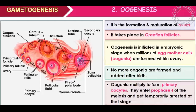Today we are going to start with the topic of oogenesis. Oogenesis is the formation and maturation of the ovum. Ovum's formation and maturation is known as oogenesis. Oogenesis takes place in Graafian follicles.